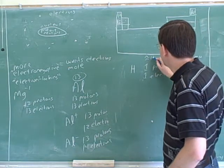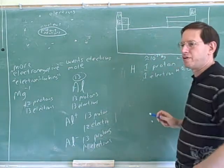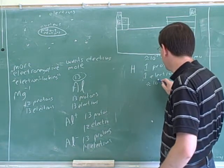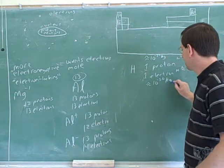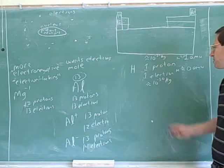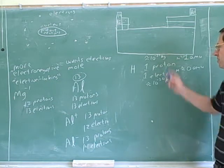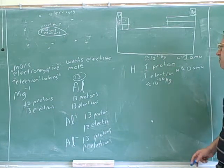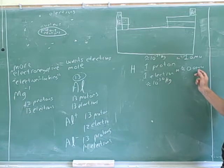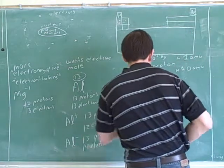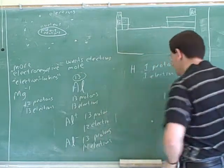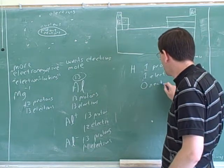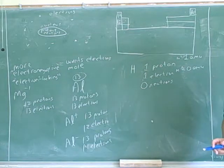The real mass of a proton is something like 10 to the negative 27 kilograms, and the mass of an electron is approximately 10 to the negative 30 kilograms. They differ by a factor of about 1,000, showing the electron is much less massive than the proton. It's more convenient to work with AMUs — atomic mass units. Normal hydrogen has no neutrons.